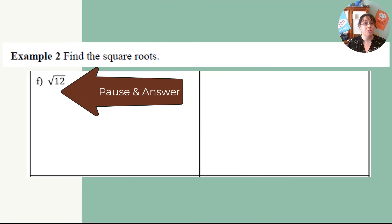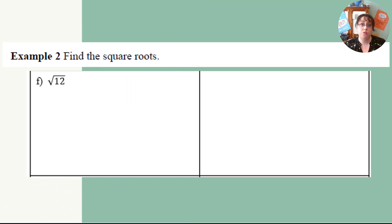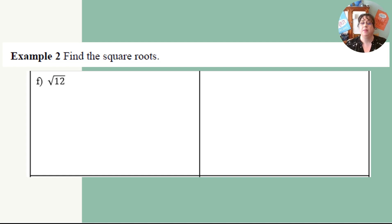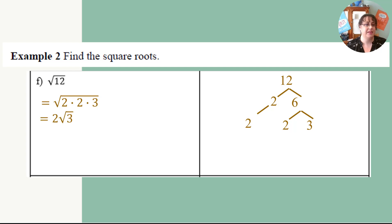Try the square root of 12. Did you do 3 times 4 or 2 times 6? It doesn't matter — neither is easier than the other. I went 2 times 6, and 6 broke down into 2 times 3. The twins are the two 2s — one 2 comes out. The 3 stayed inside the square root. The answer is 2√3.